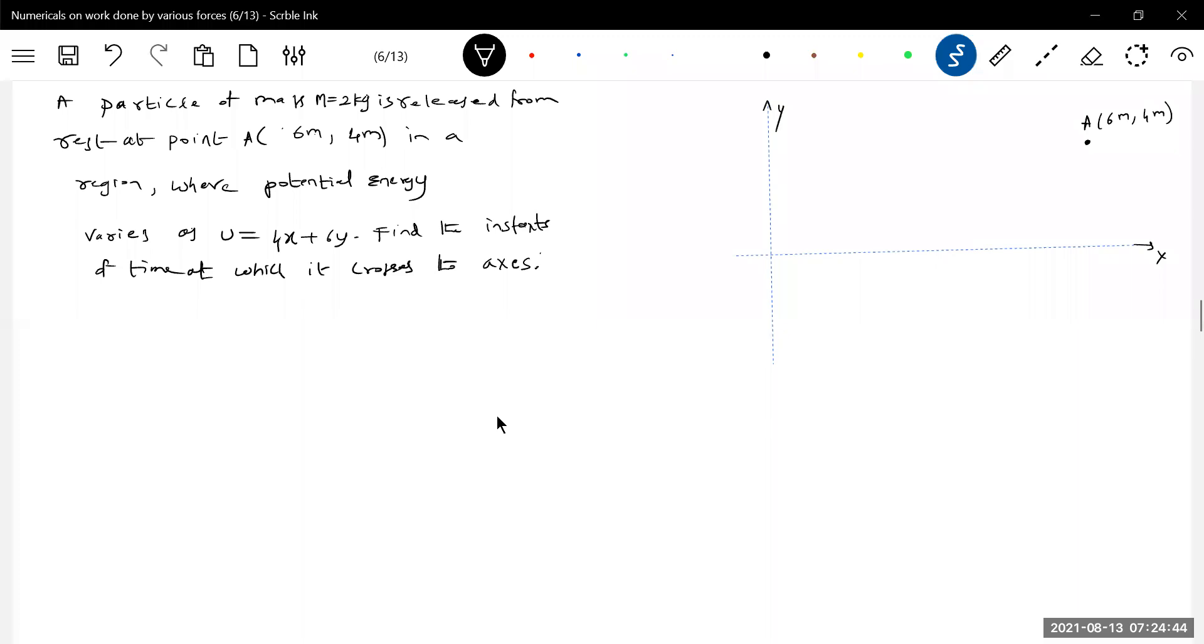For a particle on the x-axis and y-axis, we want to find the force acting on the particle. Given the potential function U = 4x + 6y, we'll differentiate this with respect to x and with respect to y.